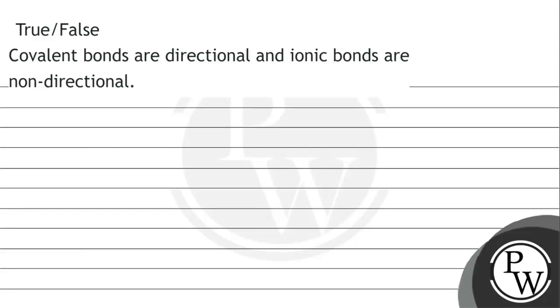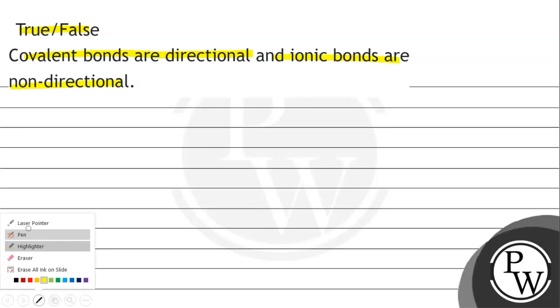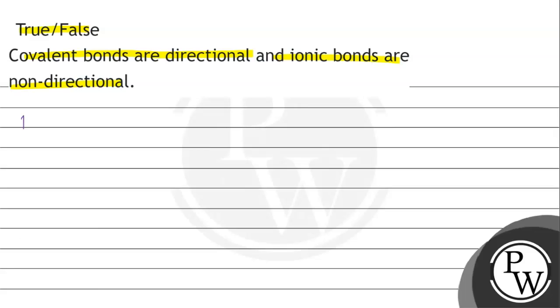Let's read this question. The question says true or false: covalent bonds are directional and ionic bonds are non-directional. The key concept of this question is ionic bonds and covalent bonds.